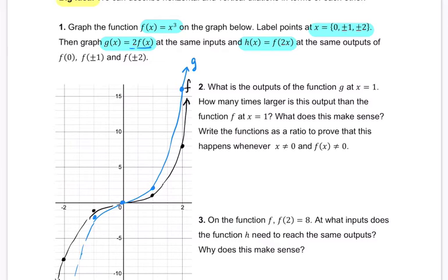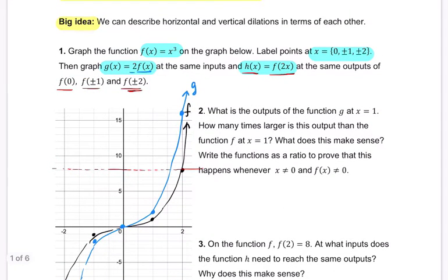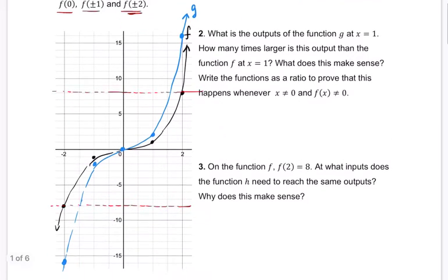Now h of x is equal to f of 2x. And we want to look at h of x at the same outputs for f of 0, so at 0, f of plus or minus 1, and f of plus or minus 2. So let's start here at plus or minus 2. So we're looking at this height, this output here, 8, and then negative 8. That's what we're looking at here. And this function, what is it doing? Well, it takes the input and doubles it before it plugs it into f. So before you cube it, you double it.